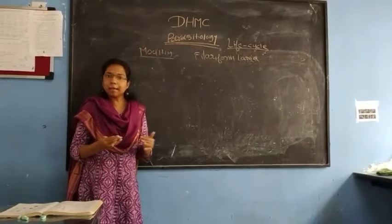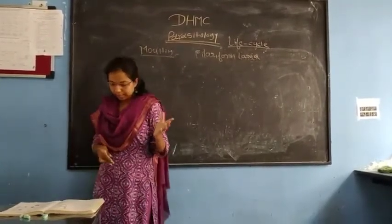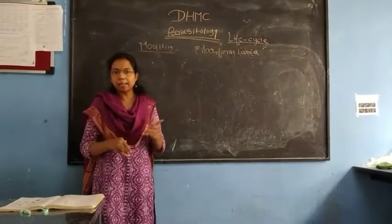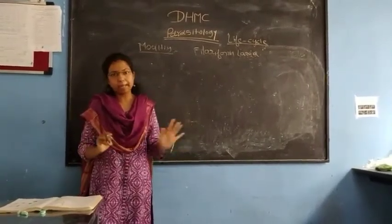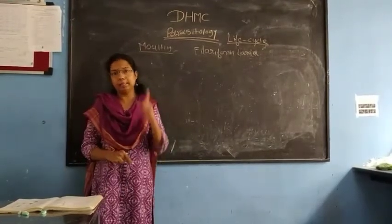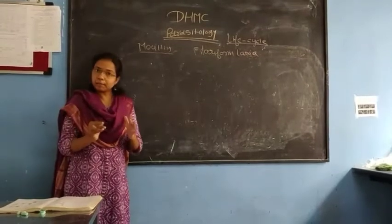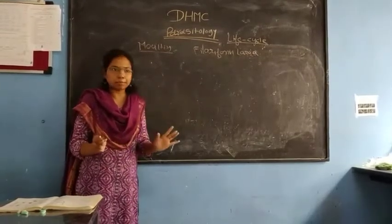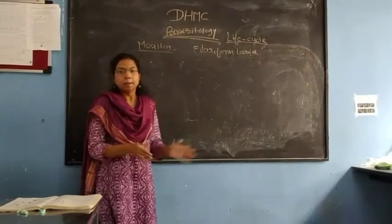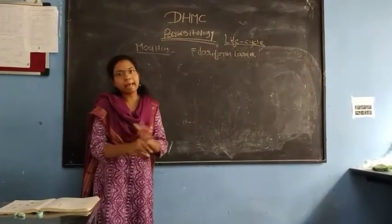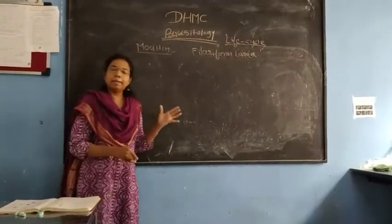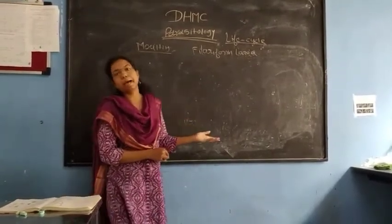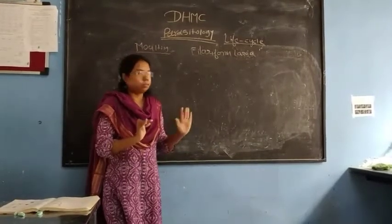Comparing the rhabditiform and filariform larvae: both have one similar point — they are actively mobile and can actively move from one place to another. The difference is that the rhabditiform larva has a small buccal cavity as compared to the filariform larva.